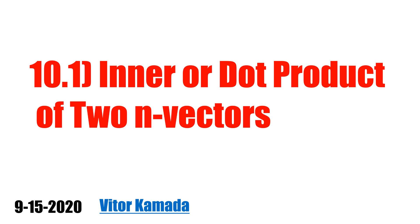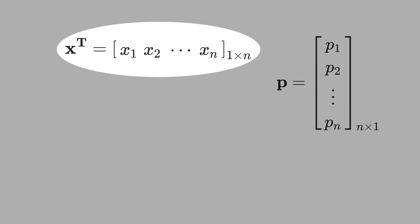In this video, let's learn what is inner or dot product of two n vectors. See here that you have a vector x transpose and a vector p. What is a vector?